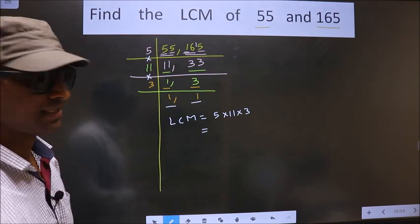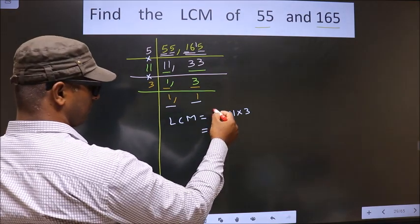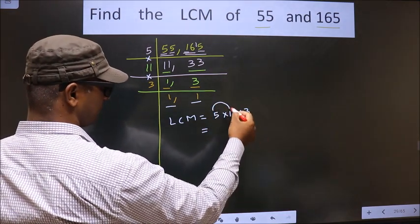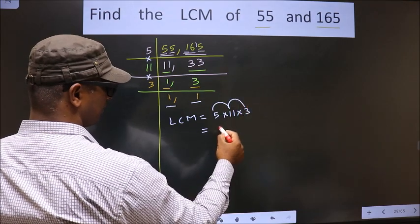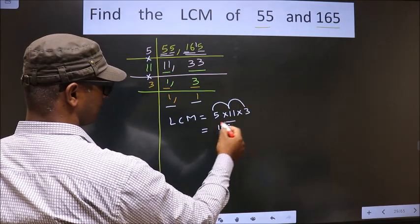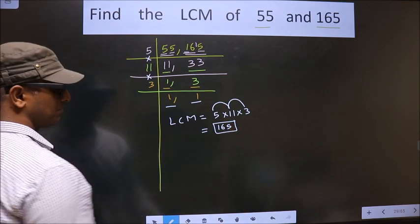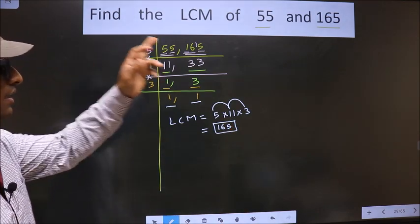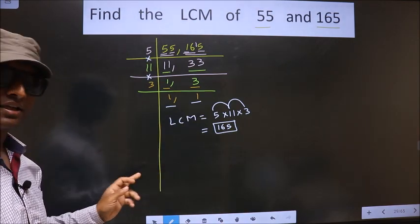Let us multiply. That is 5 into 11 equals 55, into 3. We get 165. This is our LCM. Am I clear?